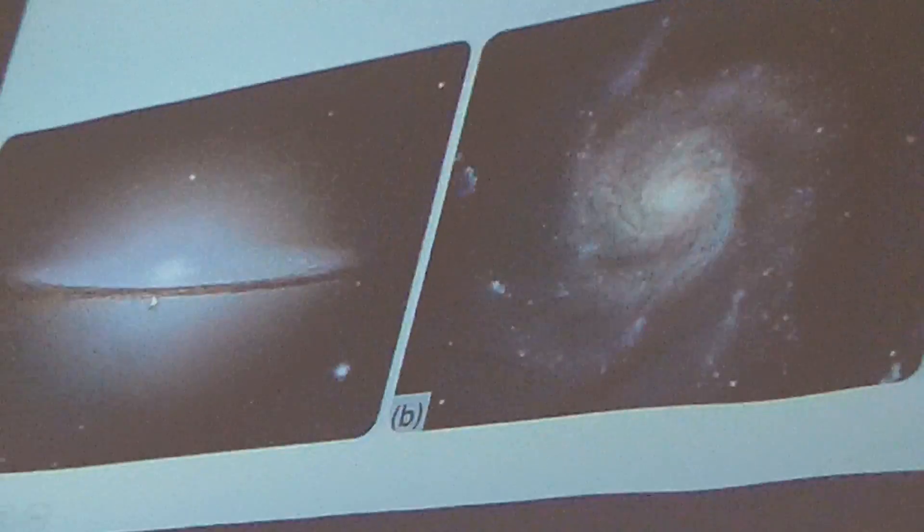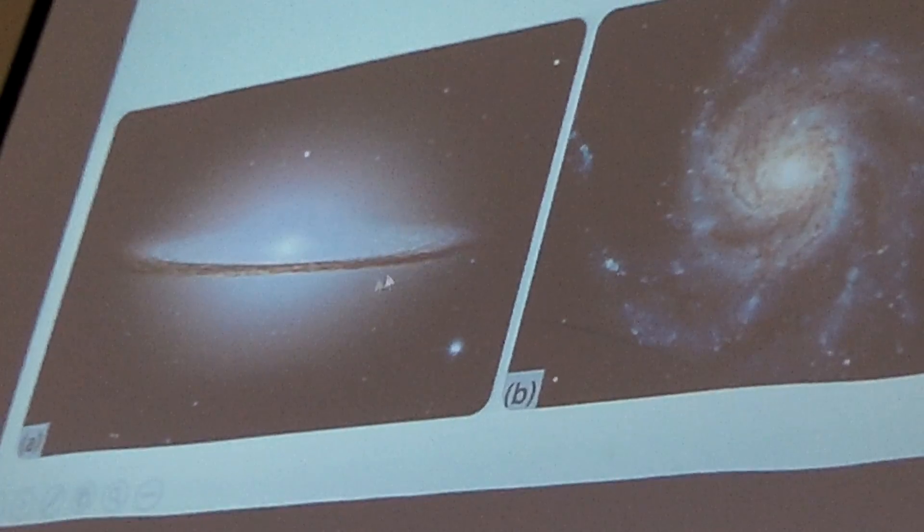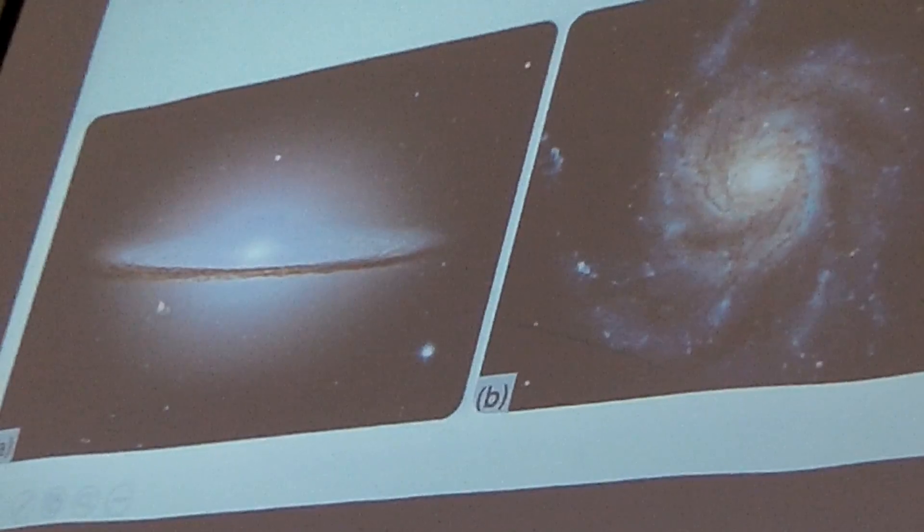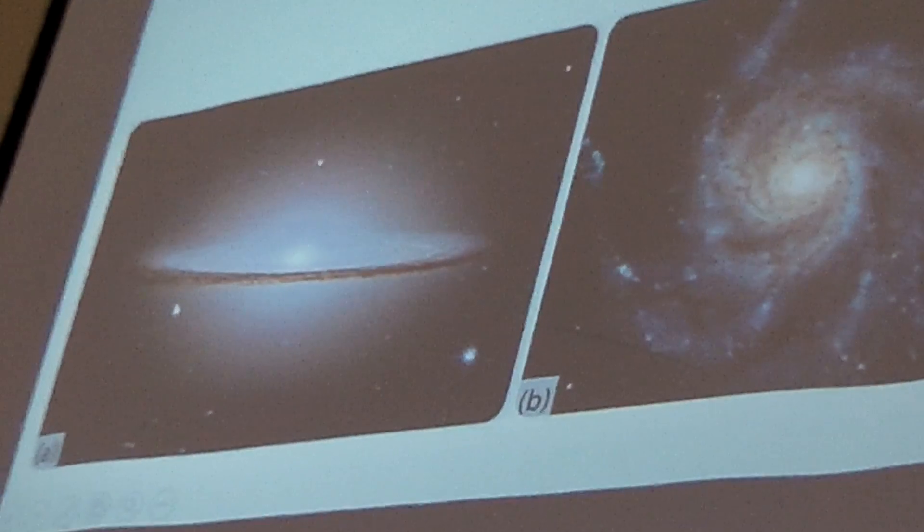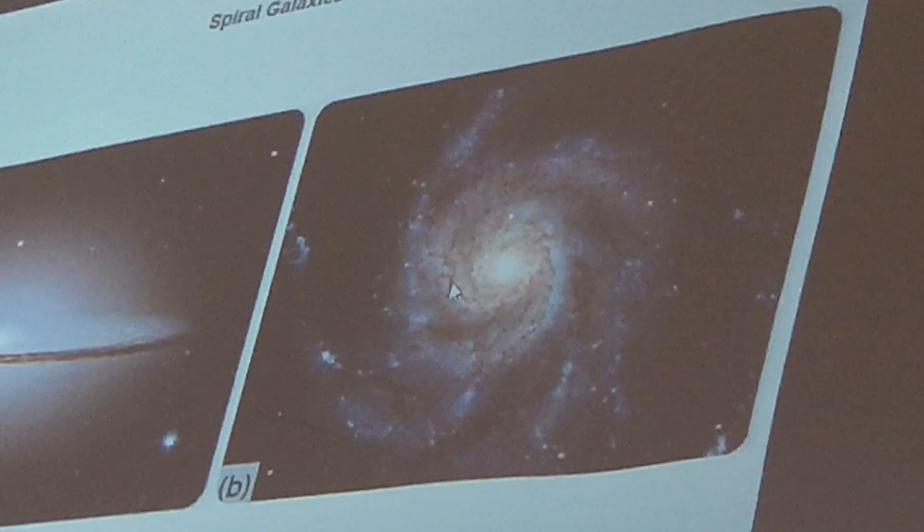Now, this is a spiral galaxy seen edge-on. It's called the Sombrero Galaxy. Isn't that pretty cool? Yeah. This is what we think the Milky Way is, a spiral galaxy.